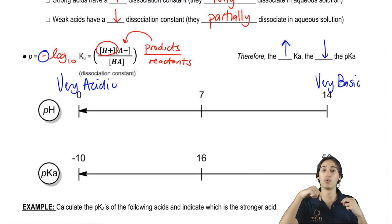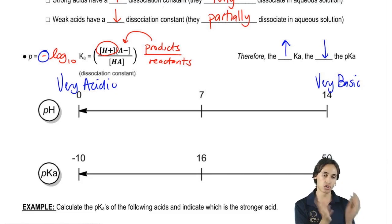And then over at 14 was the very basic solution. So remember that if it was very acidic, it would have a very low pH. And in the same way, pKa is going to do the same thing.